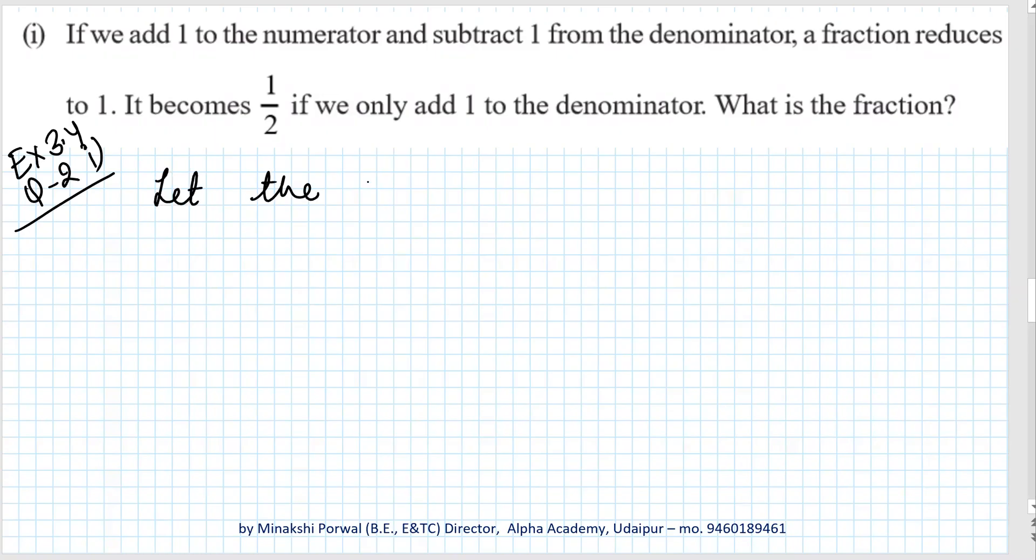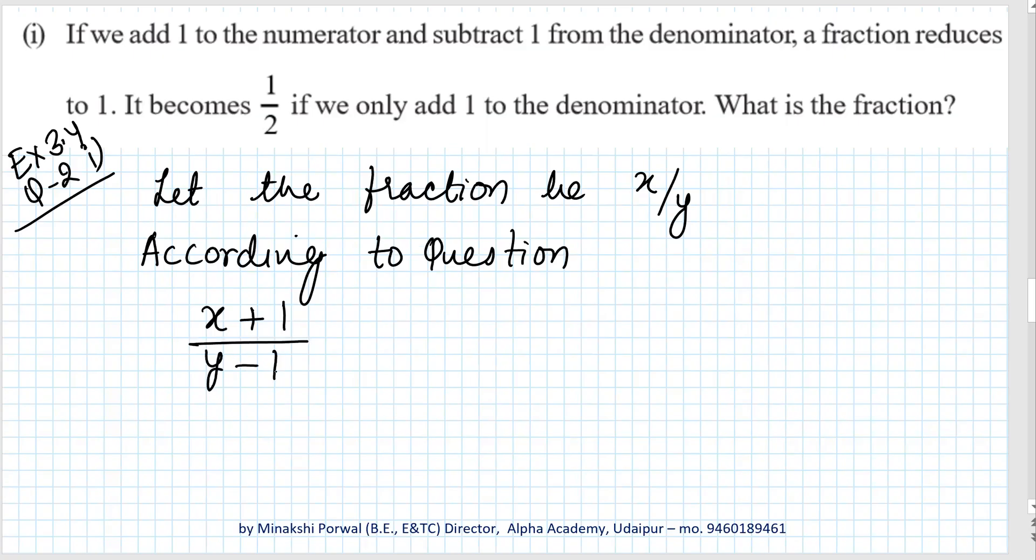Let the fraction be x/y. According to the question, if we add 1 to the numerator and subtract 1 from the denominator, the fraction reduces to 1. So the first case: (x+1)/(y-1) = 1. Cross multiplying: x+1 = y-1, which gives x-y = -2. Let this be equation 1.